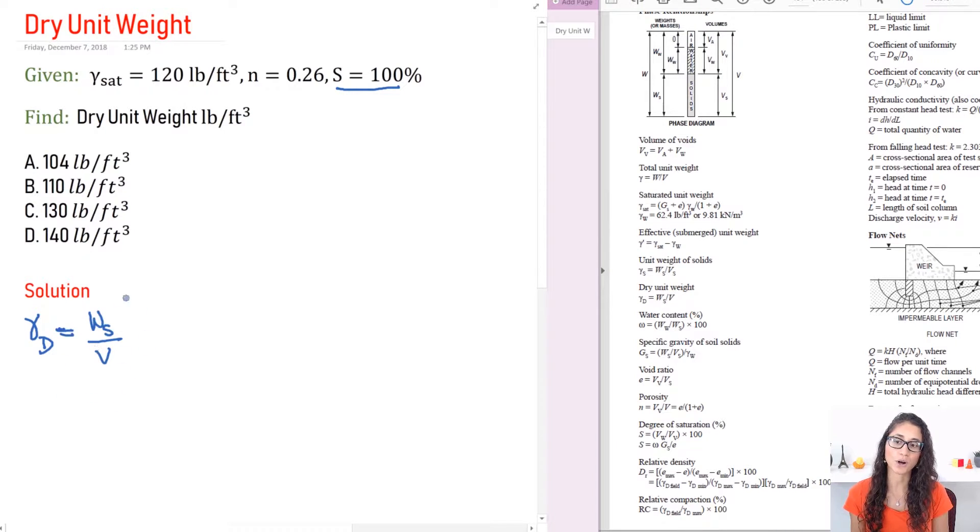So we don't have the weight of the solid. We don't have the volume so for now we really can't do anything with this equation. So the next thing I would do is maybe use the saturated unit weight. So I'm going to write the saturated unit weight is equal to the weight over volume. Now I'm not going to use this equation because there's so many variables here that we don't really have. So let's rewrite the weight.